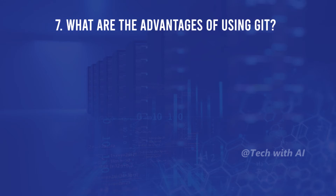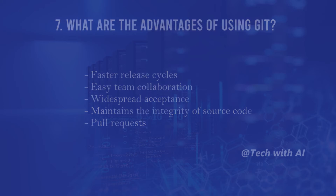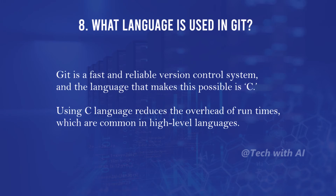What are the advantages of using Git? Faster release cycles, easy team collaboration, widespread acceptance, maintaining the integrity of source code, and pull requests. What language is used in Git? Git is a fast and reliable version control system, and the language that makes this possible is C. Using C language reduces the overhead of runtimes, which are common in high-level languages.